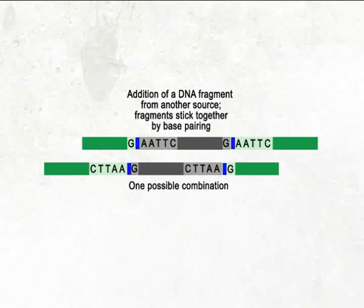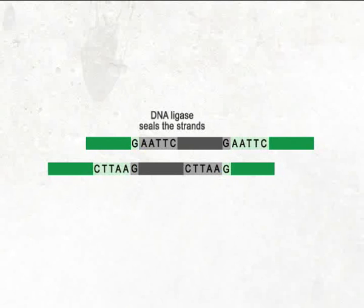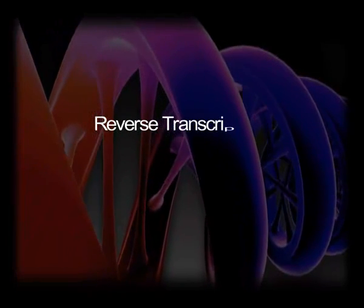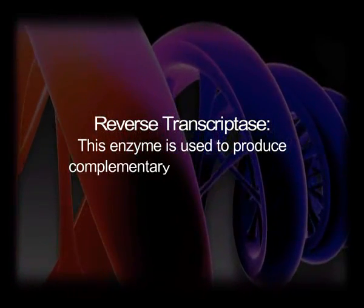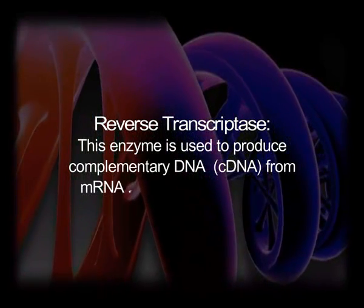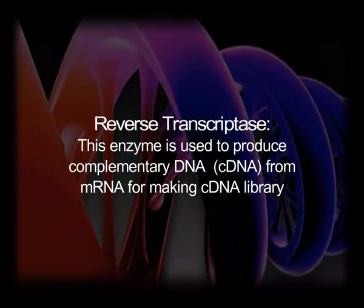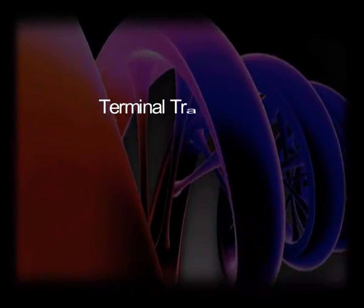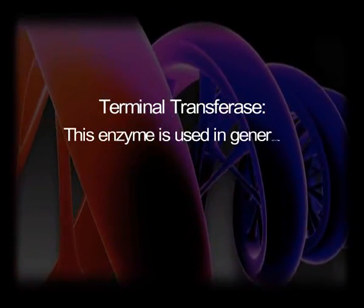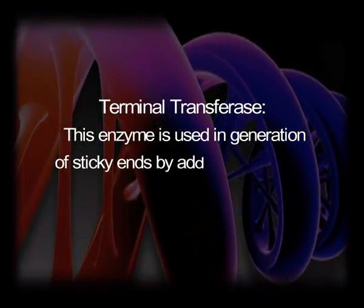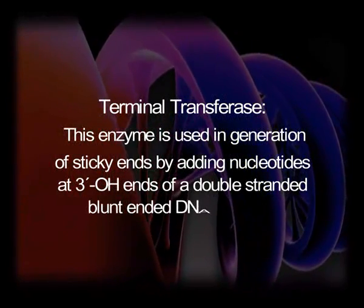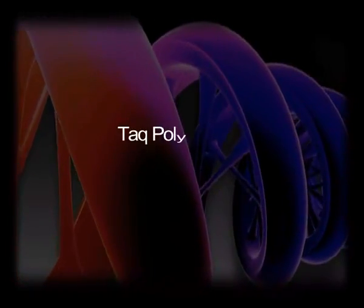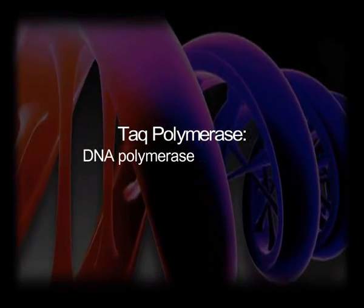Reverse transcriptase is used to produce complementary DNA (cDNA) from mRNA for making a cDNA library. Terminal transferase is used in generation of sticky ends by adding nucleotides at the 3'-OH ends of a double-stranded, blunt-ended DNA molecule. Taq polymerase is a kind of DNA polymerase used in PCR for synthesis of DNA at high temperature.